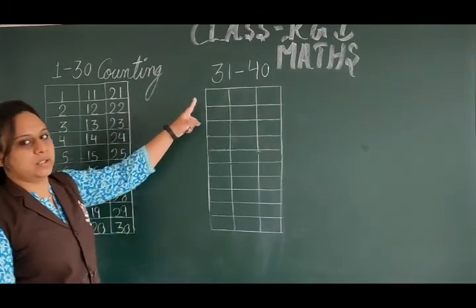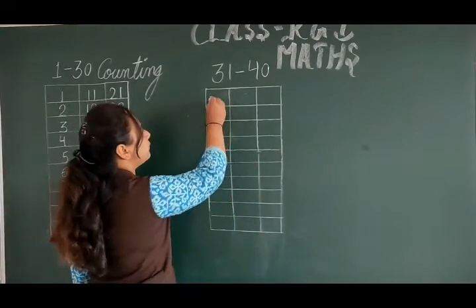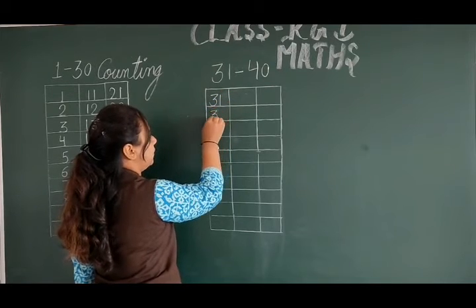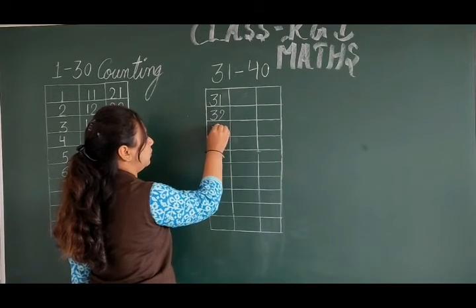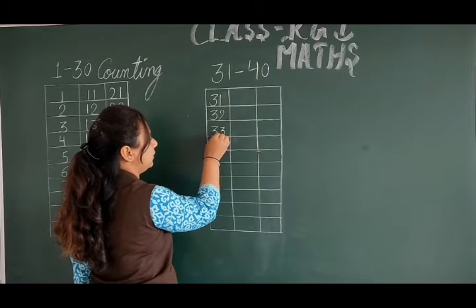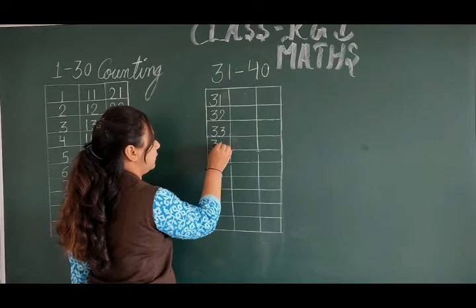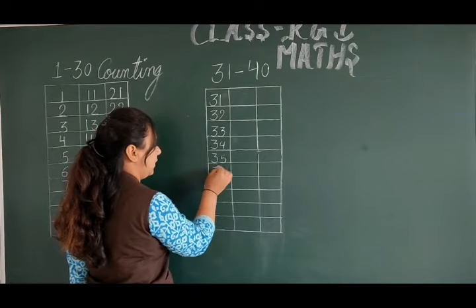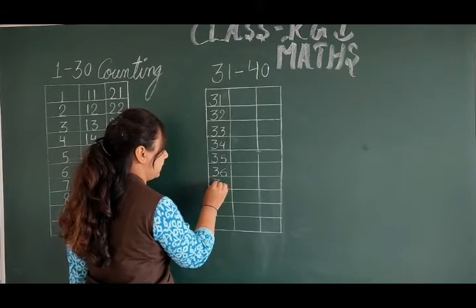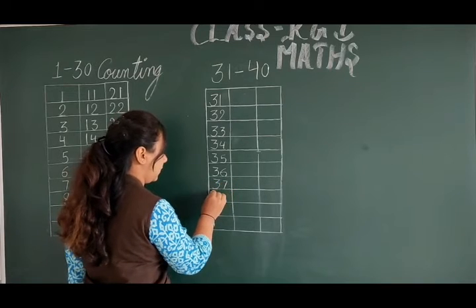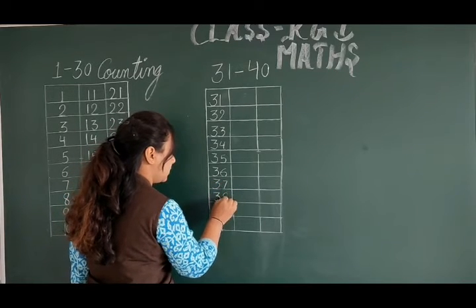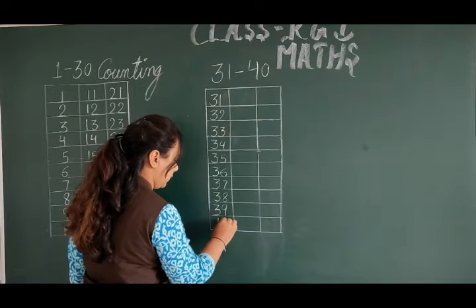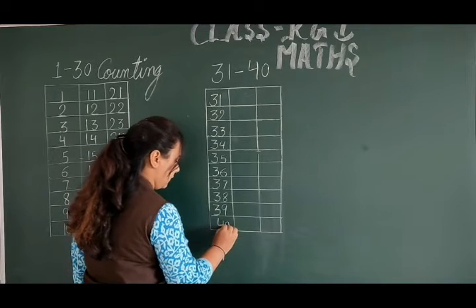Now, we will start with 31 to 40. 3, 1, 31. 3, 2, 32. 3, 3, 33. 3, 4, 34. 3, 5, 35. 3, 6, 36. 3, 7, 37. 3, 8, 38. 3, 9, 39. 4, 0, 40.